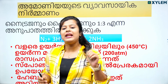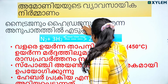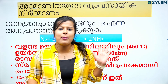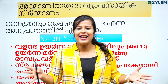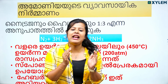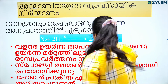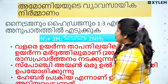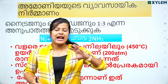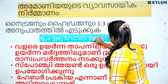So we have nitrogen and hydrogen. Nitrogen plus hydrogen — we have this ratio. The ratio of nitrogen to hydrogen is 1:3. This is N2 plus 3H2, which gives 2NH3.